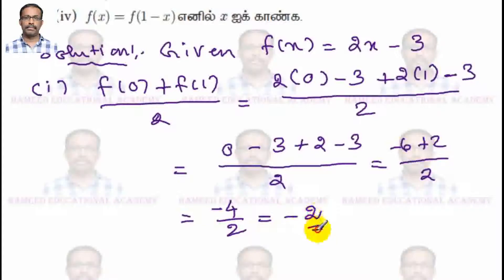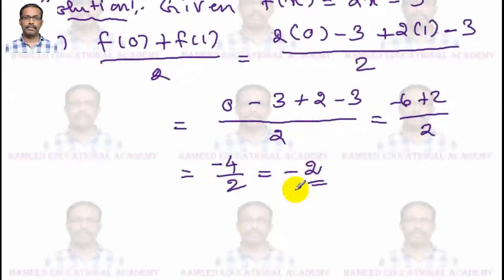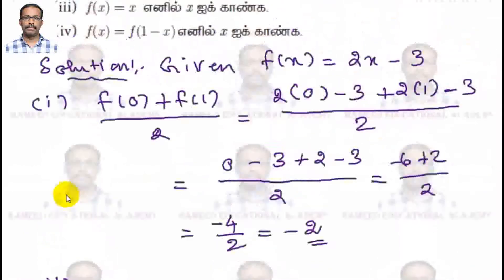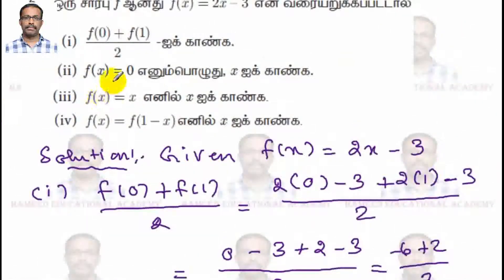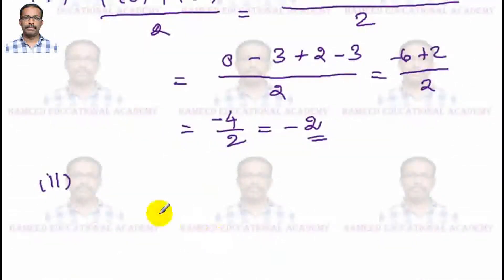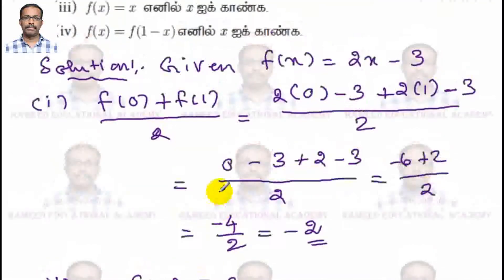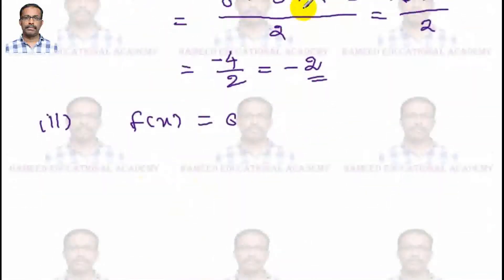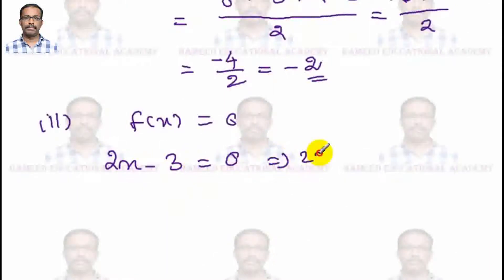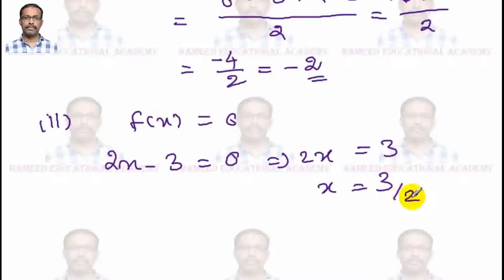The answer is minus 2. Now for sub-question number two: we need to find x when f(x) = 0. So 2x − 3 = 0, which gives 2x = 3, therefore x = 3/2.